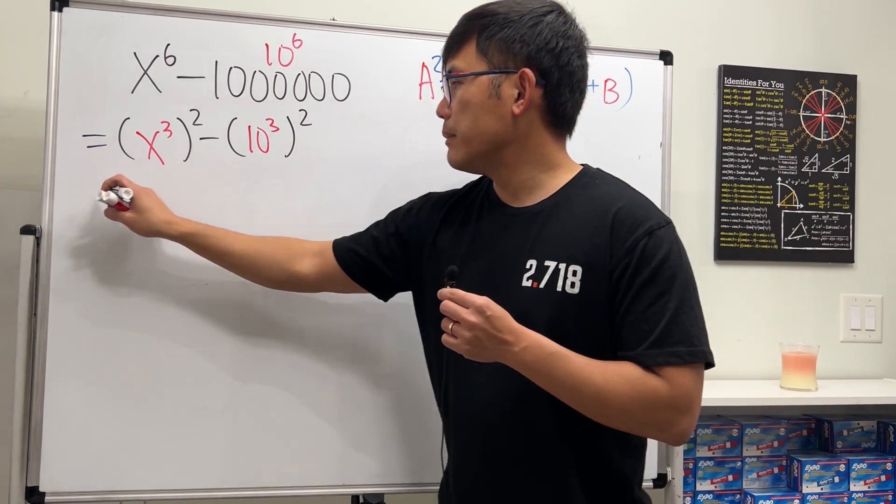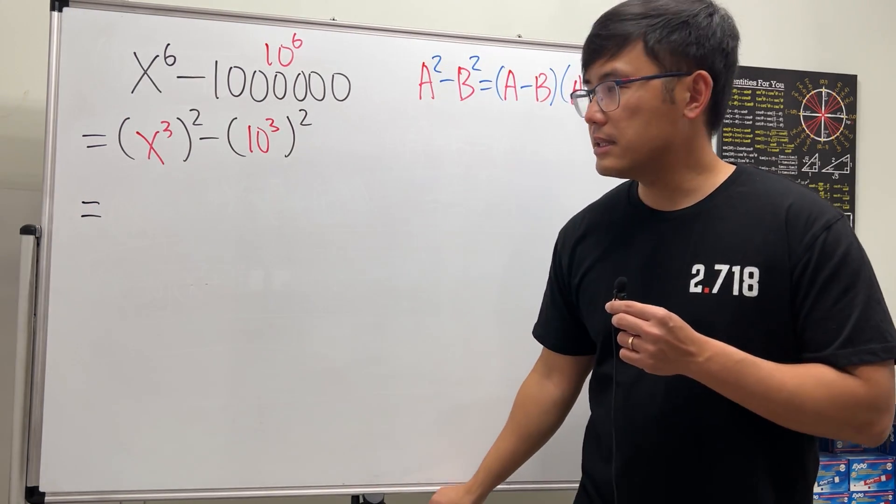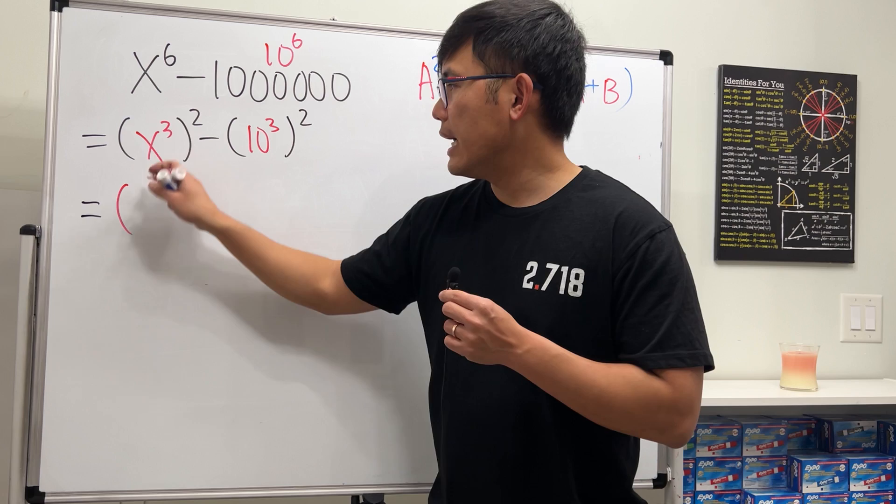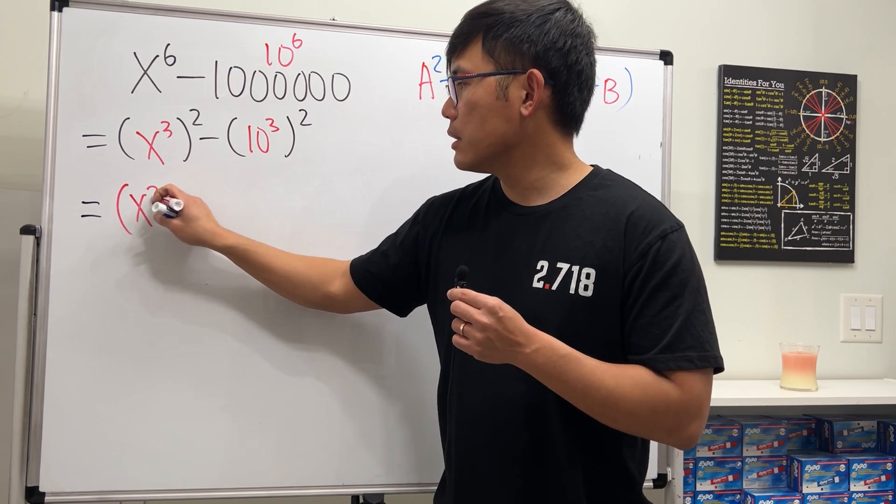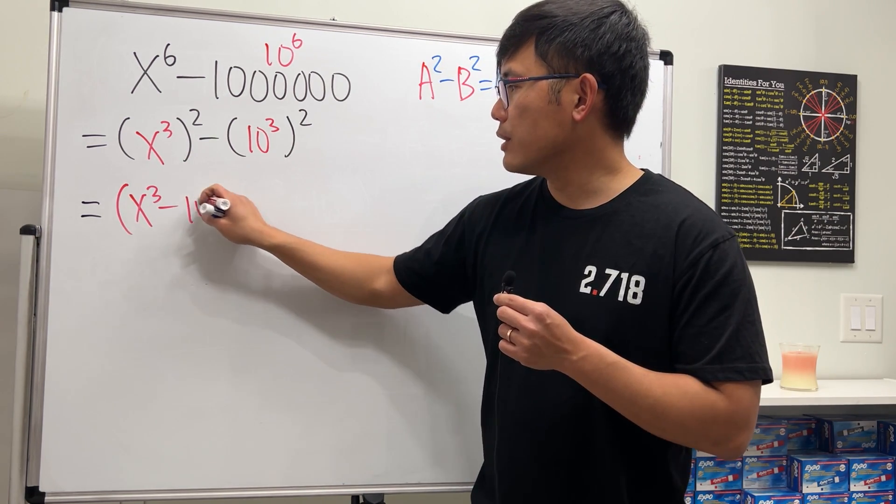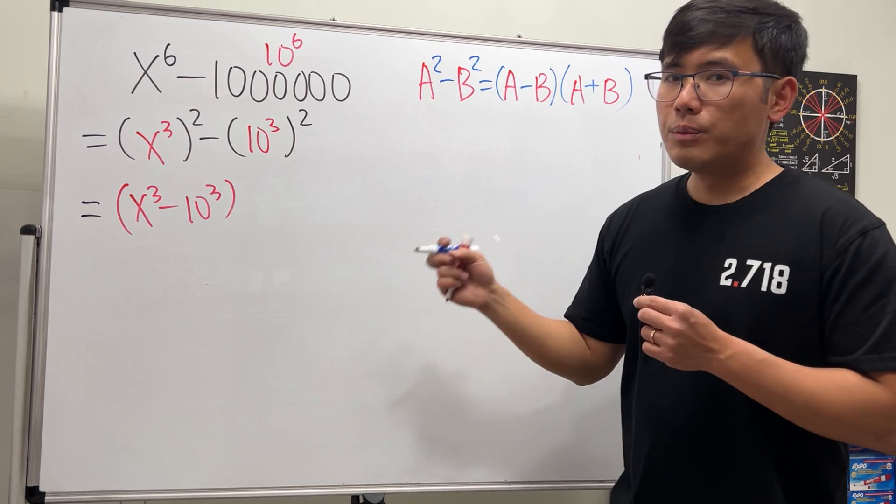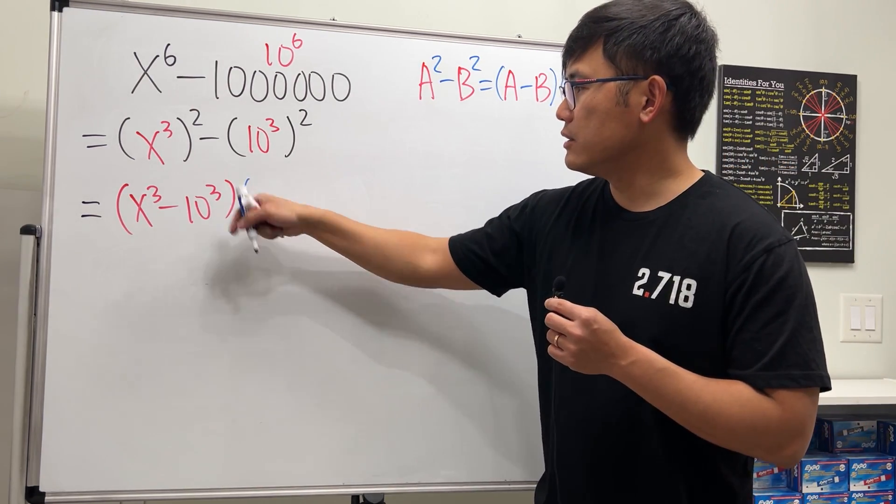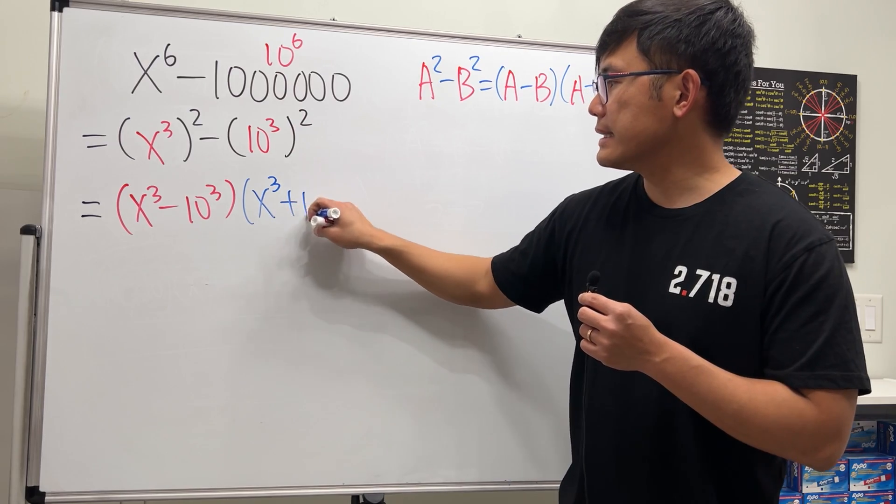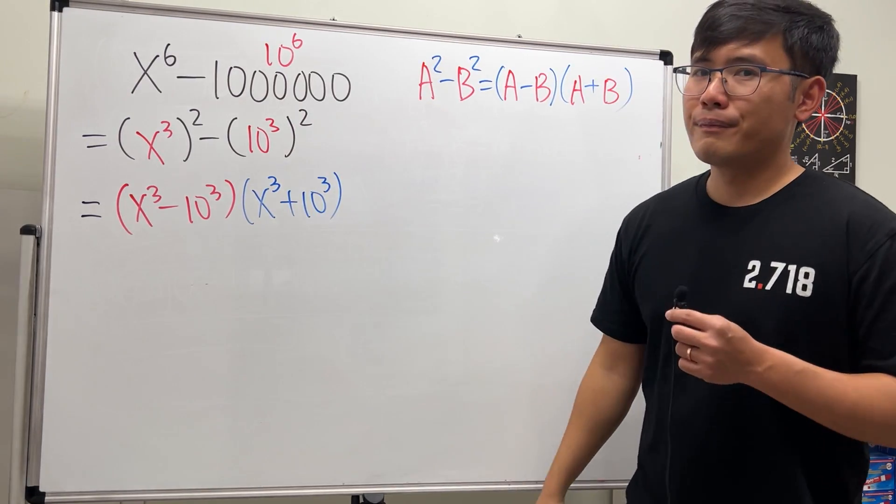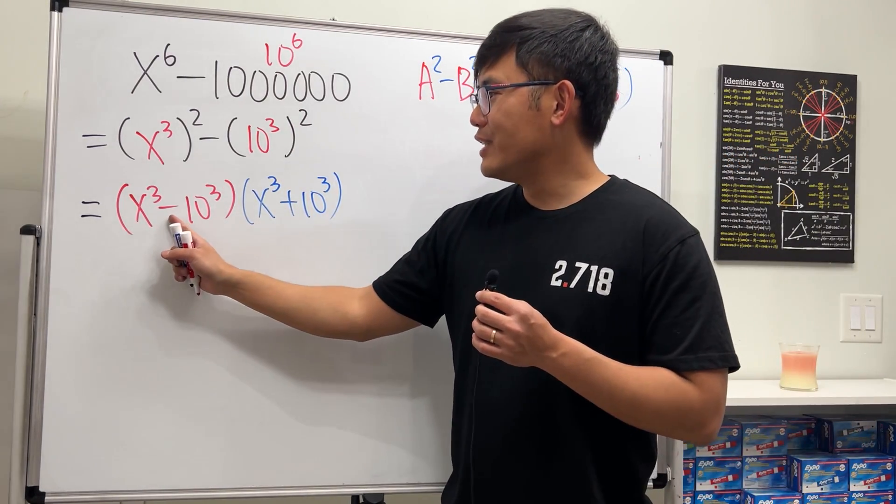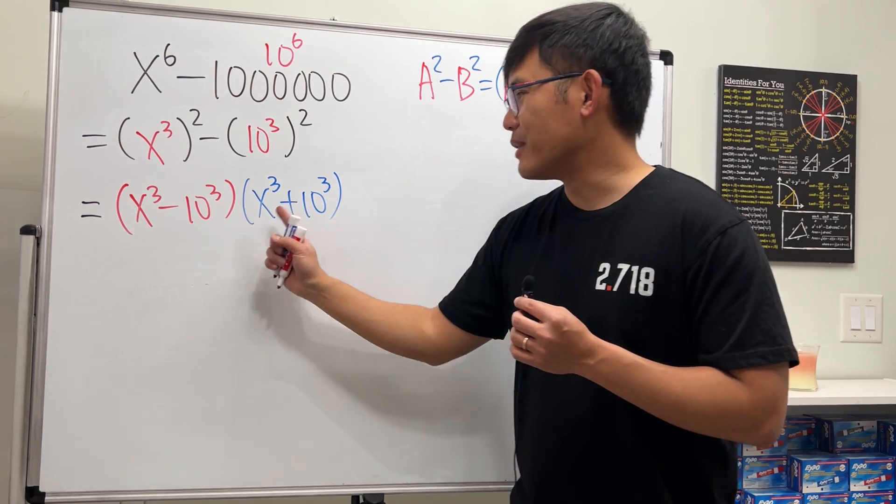Therefore, for this one right here, I'm just going to factor it for you guys as, the first one in red, I have x to the 3rd power minus that, which is 10 to the 3rd power. And then we multiply by the other factor, it's just a plus in between. x to the 3rd power plus 10 to the 3rd power. And now we end up with a difference of two cubes and a sum of two cubes.